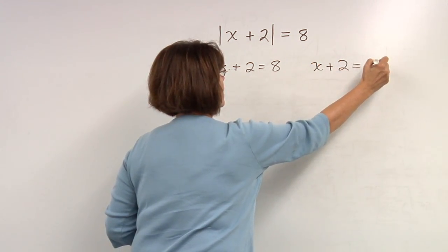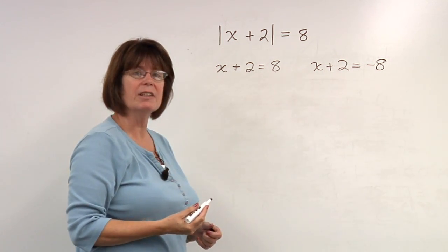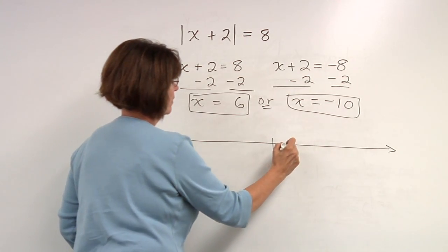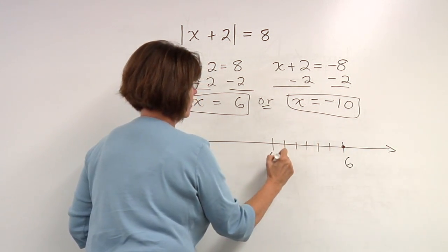We can solve each of these equations independently to get the two solutions to this absolute value equation. x equals 6 would be here, this is zero,